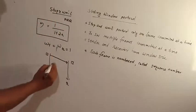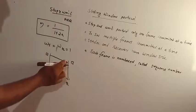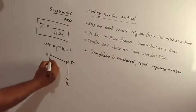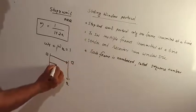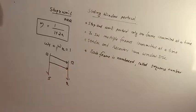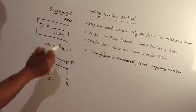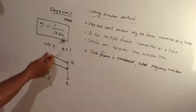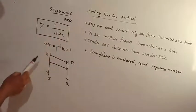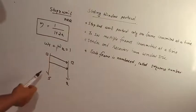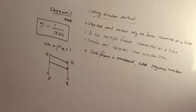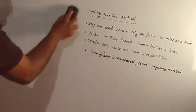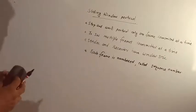Now, in stop and wait, we are going to look at a lost-type frame scenario. This is a feature of the stop and wait protocol. The efficiency of the stop and wait protocol is calculated. The next protocol is the sliding window protocol.